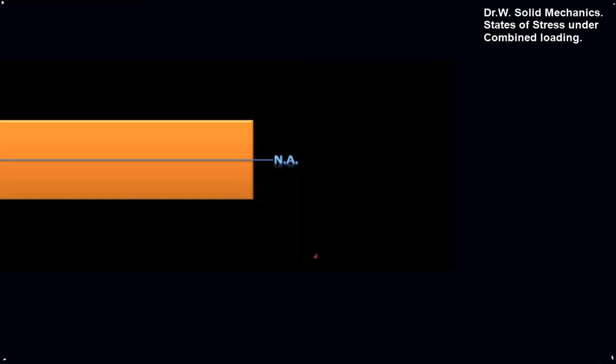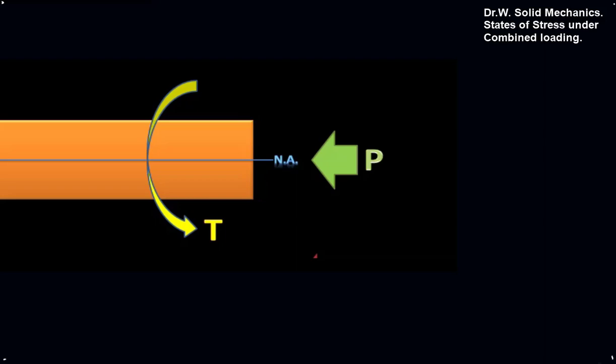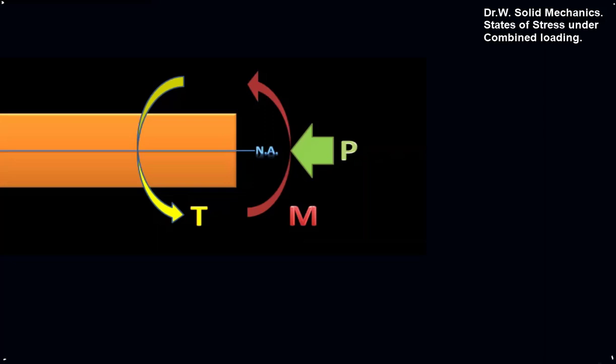In our work with beams, we usually try to locate the neutral axis as a starting point. Then we have a number of different types of loads that can be applied: an axial load P, which would put the beam into compression or possibly tension; a torque, which would put the fibers in shear; a bending moment, putting the uppermost fibers in compression and the lower fibers in tension; and shearing forces throughout the beam.